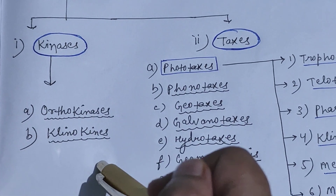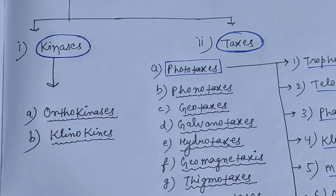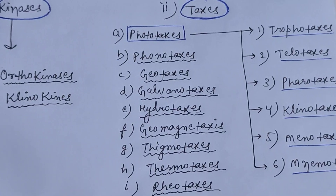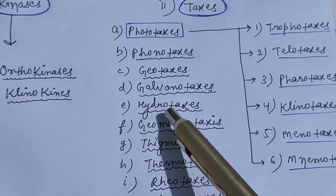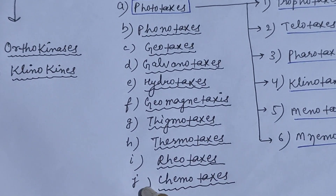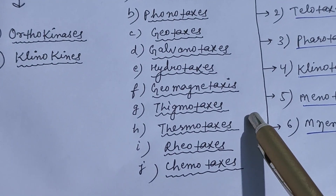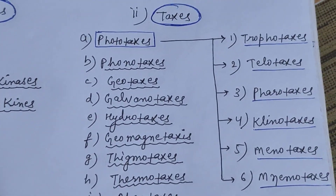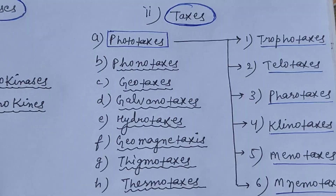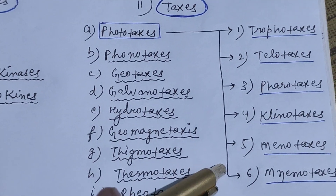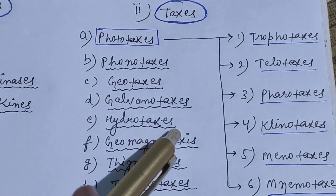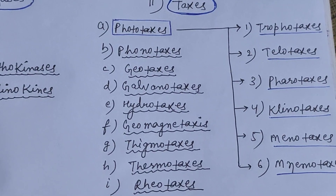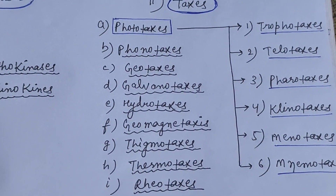Kinases has two parts: orthokinesis and klinokinesis. Taxis has several different parts: phototaxis, phonotaxis, geotaxis, galvanotaxis, hydrotaxis, geomagnetic taxis, thigmotaxis, thermotaxis, rheotaxis, and chemotaxis. Phototaxis is further divided into six types: klinotaxis, telotaxis, ferrotaxis, klinotaxis, menotaxis, and mnemotaxis. In this video we'll discuss each one by one.